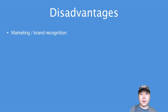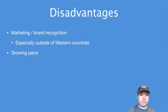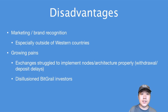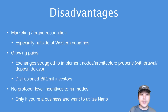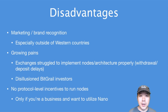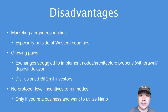No project is perfect, so let's look at some disadvantages. First is marketing and brand recognition — they know this and are working on it, but especially outside of western countries, not many people know or use Nano. Second is growing pains: exchanges have struggled to implement nodes and their architecture properly, causing withdrawal and deposit delays, which has made some investors impatient. Third is the BitGrail fiasco, which caused many people to become disillusioned with Nano even though it's probably not the fault of the team. Finally, there are no protocol-level incentives to run nodes — you don't get block rewards for verifying and maintaining the network, unlike in Bitcoin. The team says businesses and exchanges that want to use Nano will have an incentive to run nodes, but that's not as strong as directly financially incentivizing node operators at the protocol level.